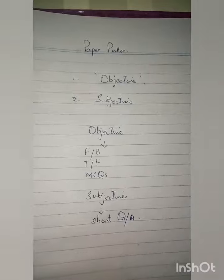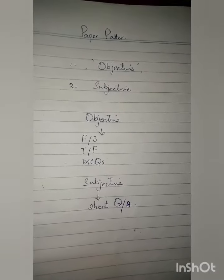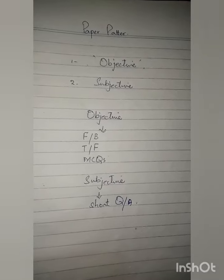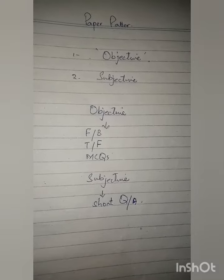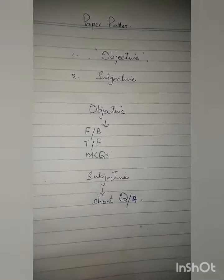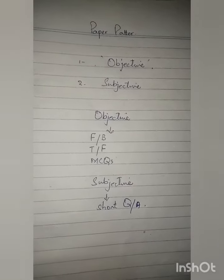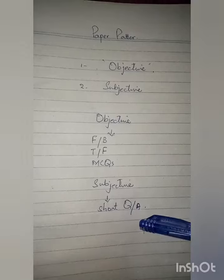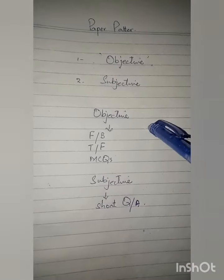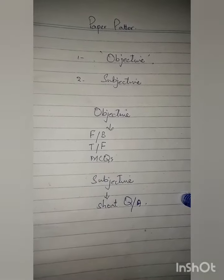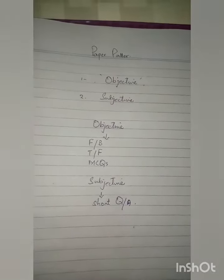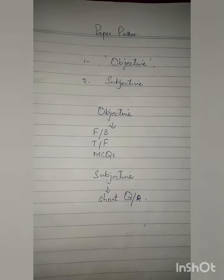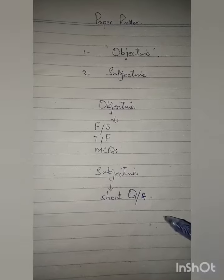In the objective part, you need to fill in the blanks. For question answers, write one to two lines, maximum three lines. You have to focus on objective rather than subjective. Focus on your book's short question answers which are short — two to two and a half lines — and you have to focus on them.